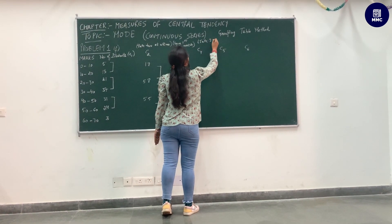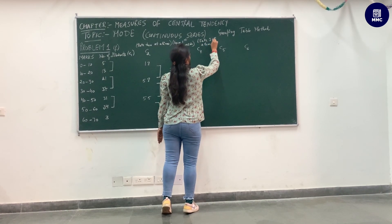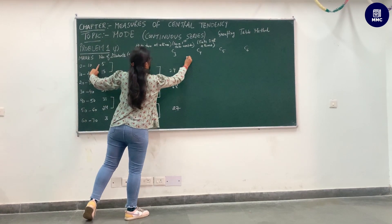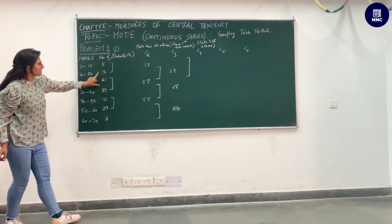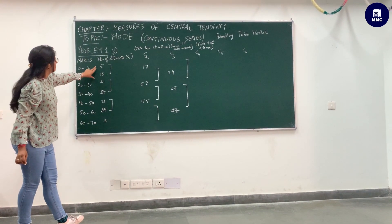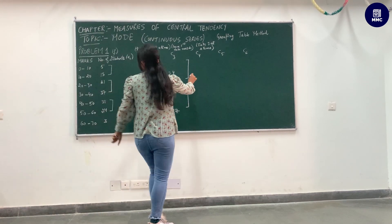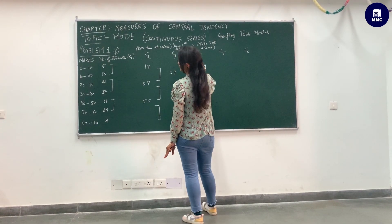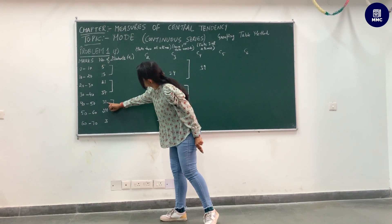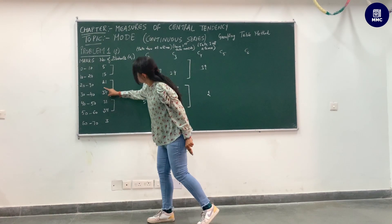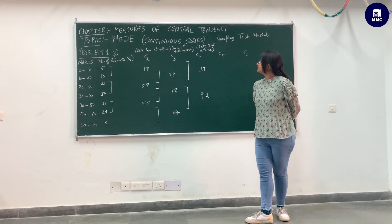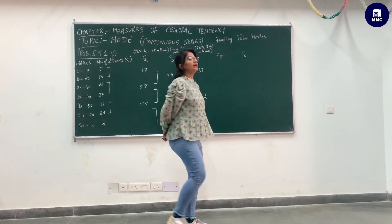For column number four, you have to take three at a time from the starting point. Take the first three, then 5, 13, and 21. Then take the next three: 37, 31, and 31. Adding these gives 92. So we have generated up to column number four.